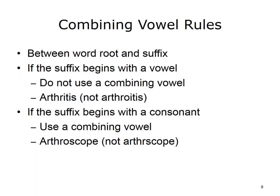Just like any language, there are rules regarding the use of vowels. The rule on this slide deals with the use of the combining vowel between a word root and a suffix. If the suffix begins with a vowel, we do not use a combining vowel. For example, in the word arthritis, arthr means joint and itis means inflammation. Typically we would use the combining vowel o to combine the two, but because the suffix itis begins with a vowel, we would not use the o — we would just connect the two words together to form the word arthritis.